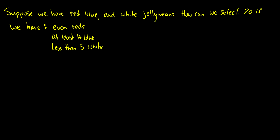Here's another example. Suppose we have red, blue, and white jelly beans. How do we select 20 of them if we have to have an even amount of reds, at least 14 blue, and less than five white? For reds, they have to be even, so we can have zero — I always write x to the zero as 1 — then x squared, x to the four, x to the six, and we can go all the way up to x to the 20. We can go on to infinity, but for this example we're only picking 20 total, so let's not go over 20.